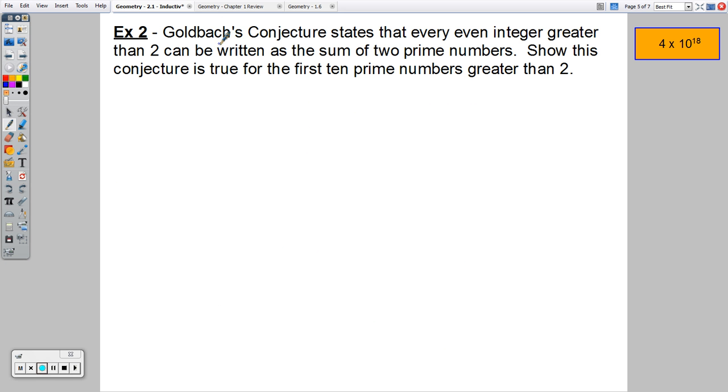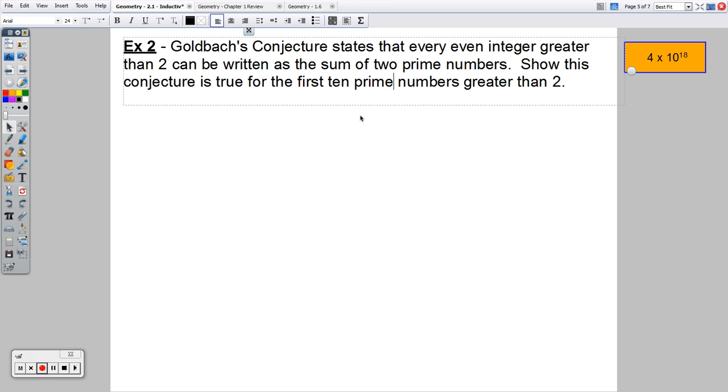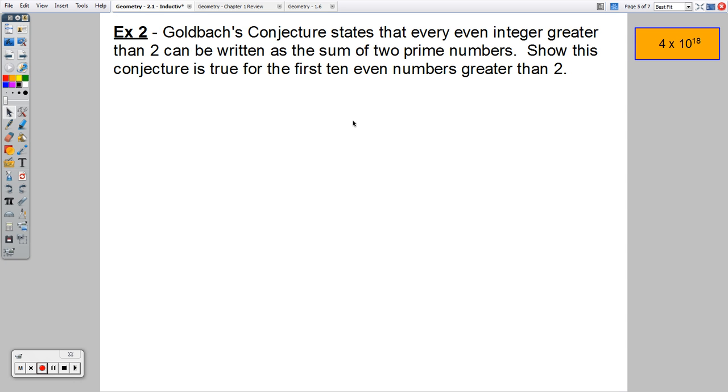Moving on to example two, a very famous conjecture. Goldbach's conjecture states that every even integer greater than two can be written as the sum of two prime numbers. Show this conjecture is true for the first 10 even numbers greater than two. So the first 10 even numbers greater than two, I have four would be the first even number greater than two.